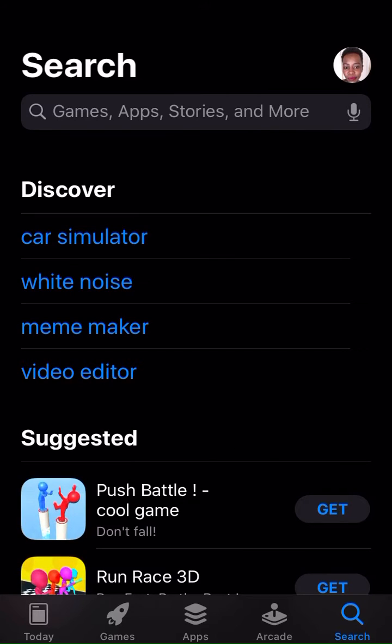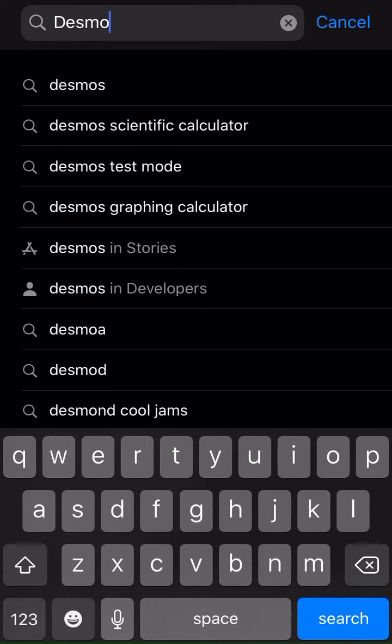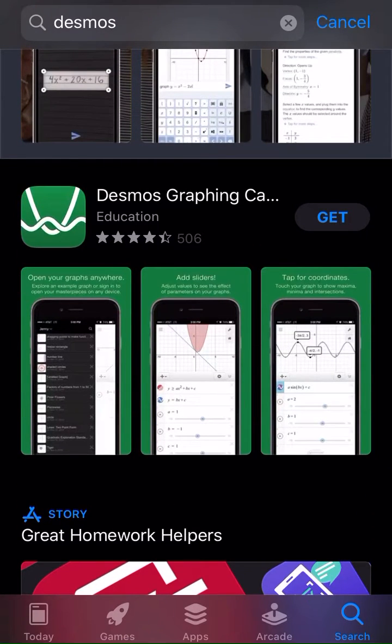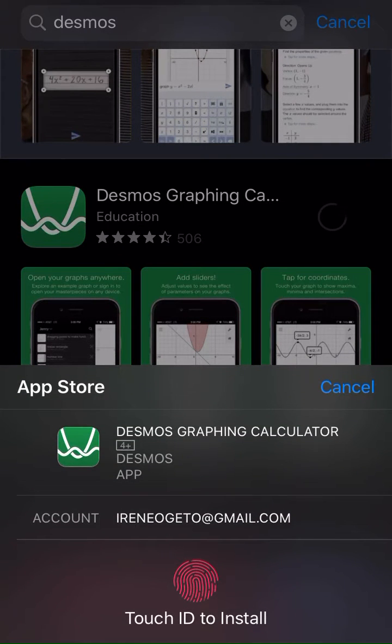Search for Desmos, and when you type Desmos, you'll see Desmos graphing calculator. Click get, and I'm going to use my touch ID to install it. It's free.